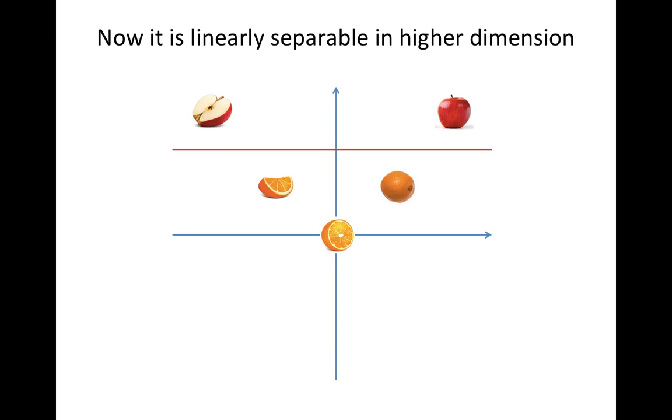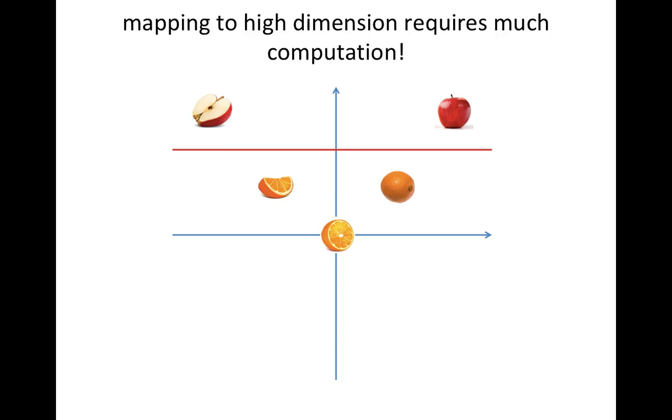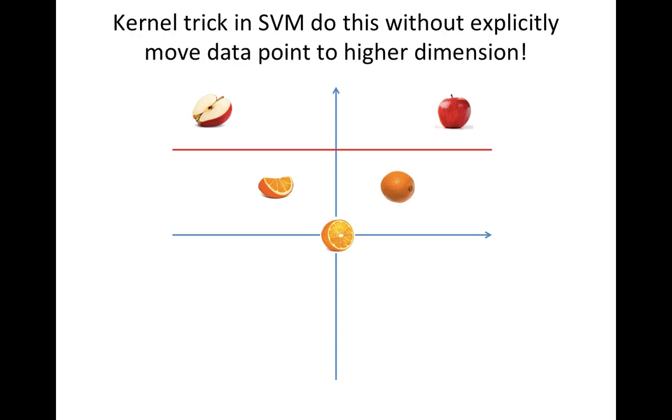We call this function a mapping function. Unfortunately, the mapping function equals high dimensional requests, which means high computation. But there is the kernel trick, which takes much less computation but has the same effect as the mapping function.